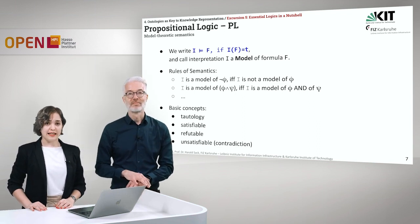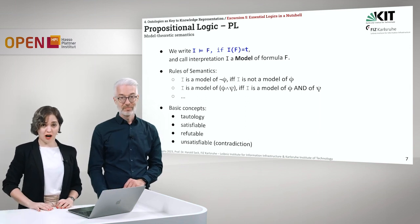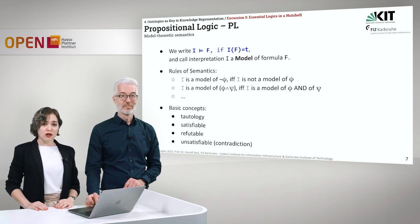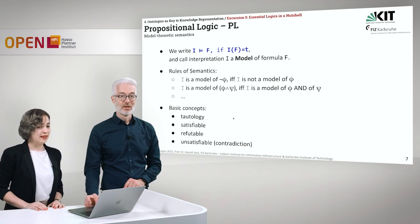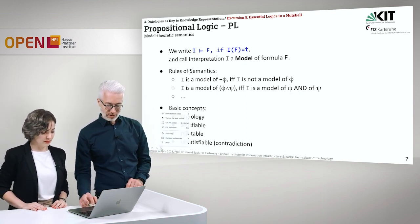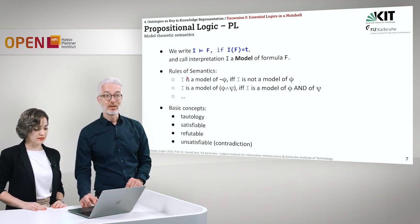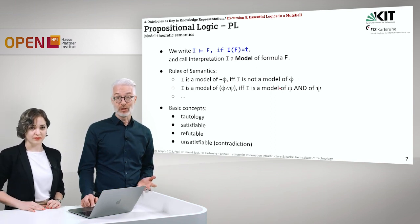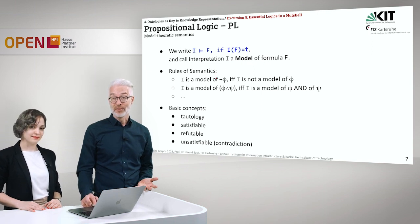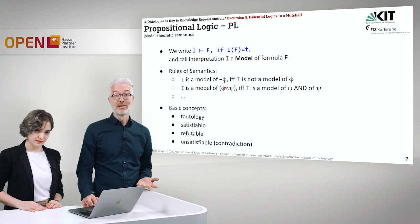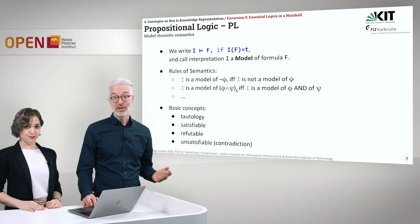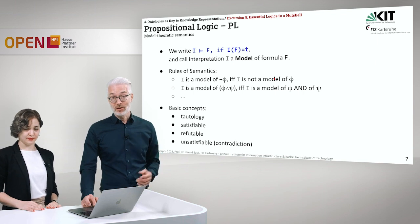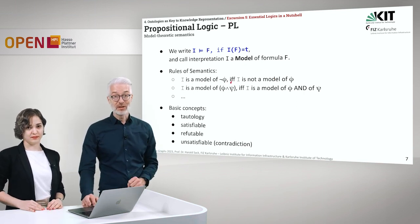When we write 'I entails F,' or F is a semantic consequence of interpretation I, and the formula F is true under interpretation I, we call interpretation I a model of formula F. In model-theoretic semantics: I is a model of not-phi if and only if I is not a model of phi. I is a model of phi and psi if and only if I is a model of phi as well as of psi. You continue in the same way with disjunction, implication, and equivalence, and then you have stated all the necessary rules of semantics.